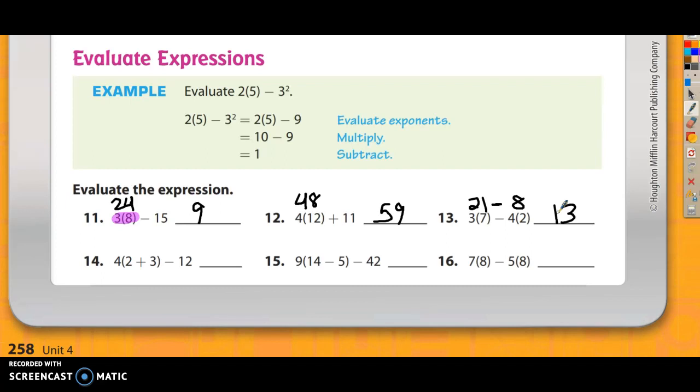Number 14, it starts to get a tiny bit trickier. What I do on 14 is I first do 2 plus 3, that's 5. And then 5 right next to 4 means 5 times 4, that's 20. And now I have 20 minus 12 is 8.